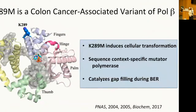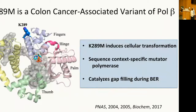A while back, we started to work on this particular somatic polymerase mutation, K289M — lysine to methionine at the tip of helix N. Helix N is very important for positioning the dCTP or the dNTP in the active site. This was identified as being present in a colon carcinoma. Our group showed that it induces cellular transformation if we express it in cells, that it's a sequence context-specific mutator polymerase, and we know that it acts very nicely in base excision repair — it's quite an active DNA polymerase.